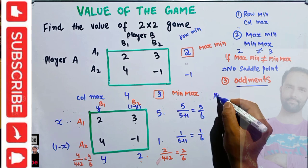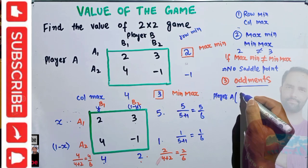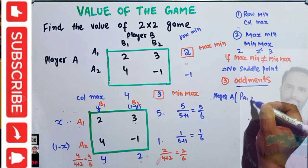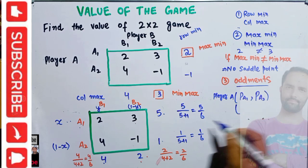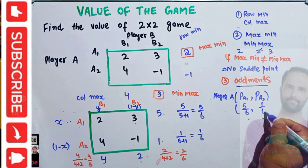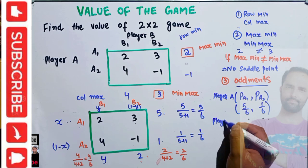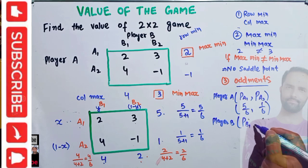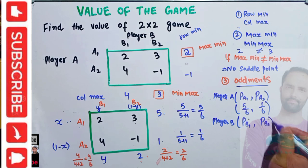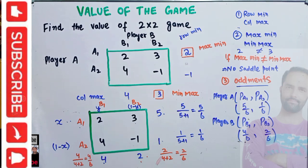So the strategy profile for Player A — the probability of choosing A1 and A2 — is 5/6 and 1/6 respectively. For Player B, the probability of choosing B1 and B2 is 4/6 and 2/6 respectively.